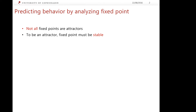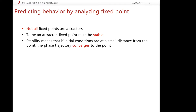There must be some different approach to analyze stability. In fact, stability means that if we set initial conditions not far away from the fixed point, but at some small distance, then the phase trajectory will converge to the fixed point in the long term. If the phase trajectory goes away from the fixed point, it means the fixed point is unstable.